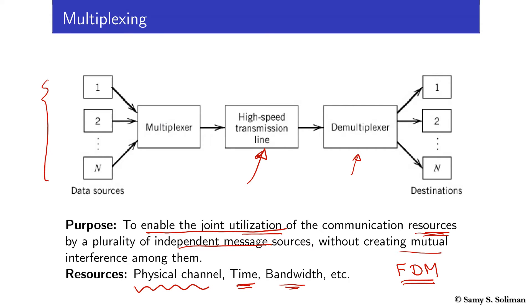For example, we previously discussed Frequency Division Multiplexing, where we had multiple sources of independent messages using the same transmission link and the same overall system bandwidth to transmit that plurality of independent signals. We ensured no mutual interference by modulating each signal using a different carrier signal so that there is no overlap between the multiplexed signals. At the receiving side, demultiplexing was done using bandpass filters that can select only one required message and reject all others.